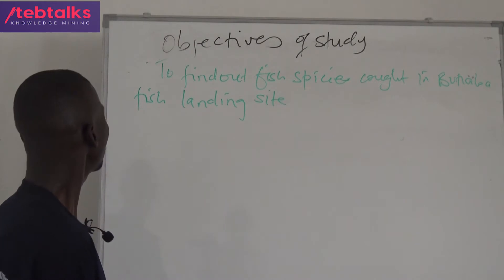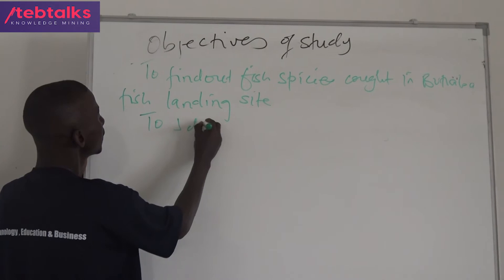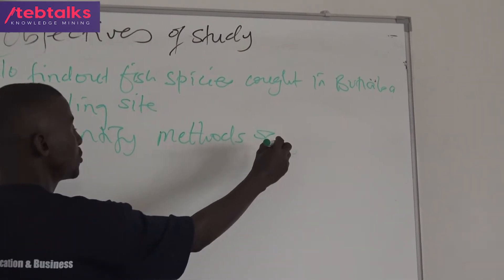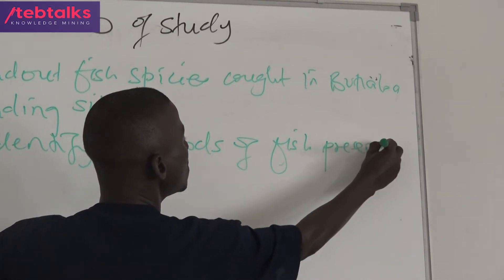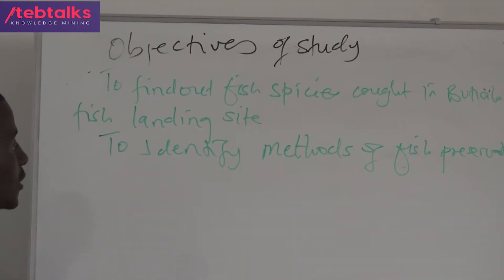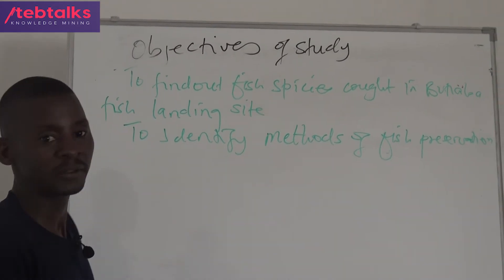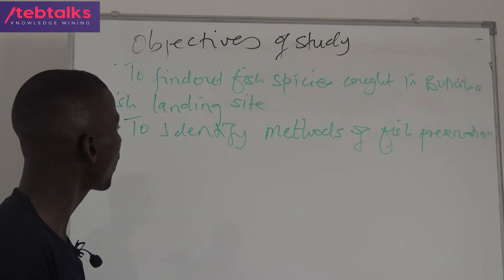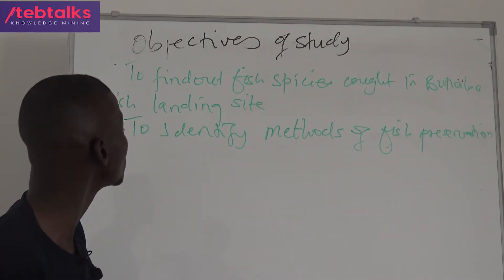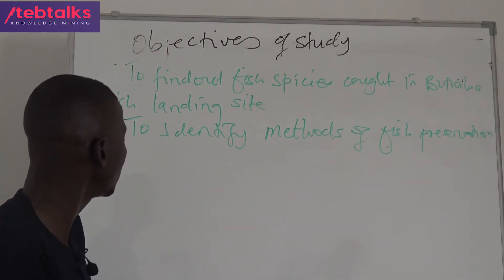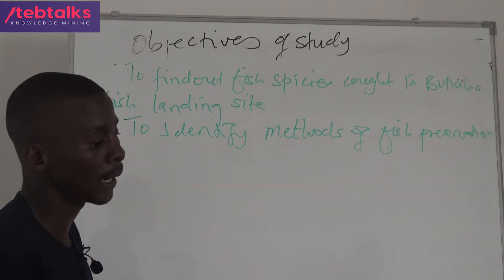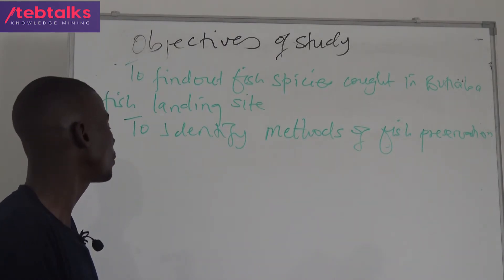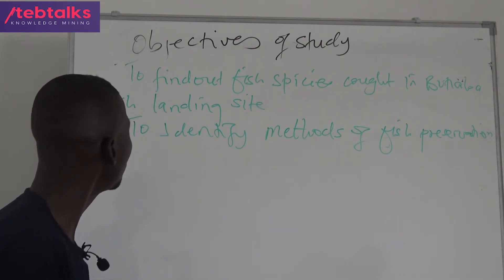The fourth objective is to identify the methods of fish preservation. After the fish species have been caught, how are they preserved? You will only know how they are preserved by going there and stating it in your objectives. Then you make an inquiry about what preservation methods are being used. You may see them by yourself using your naked eyes, or you may ask what fish species are caught and use any other mode of obtaining information.